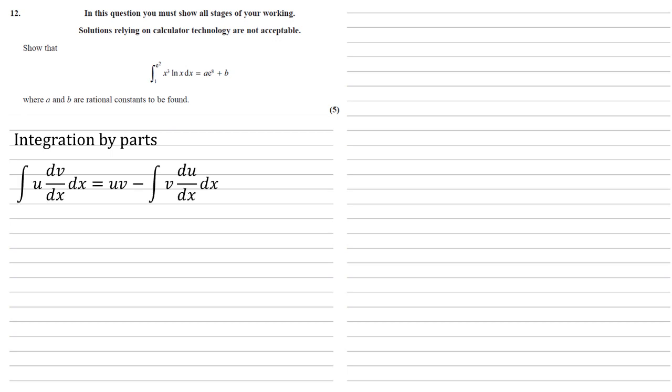So here's our formula for integration by parts. If we write out the integral as u dv by dx dx, then this is equal to u times v minus the integral of v du dx with respect to x. So we need to pick which of the x cubed and the ln x are going to be u, which is going to be dv by dx.